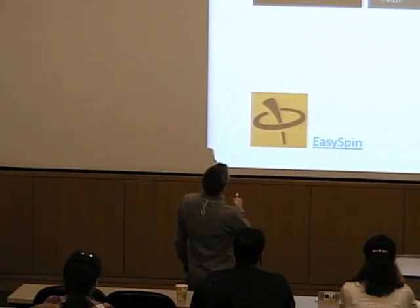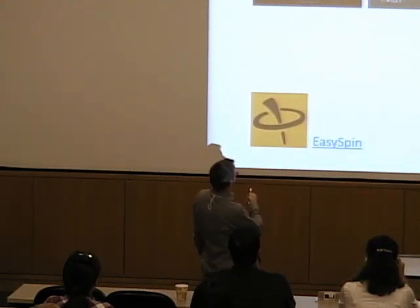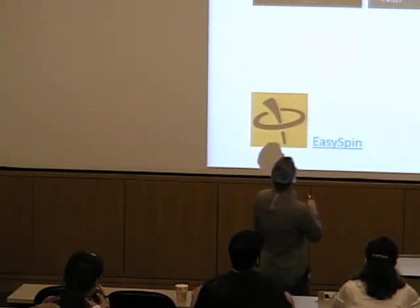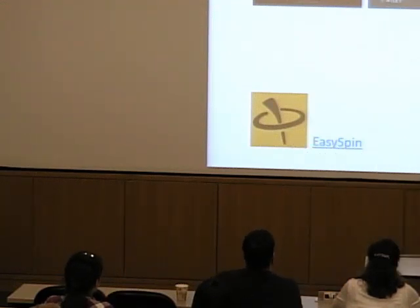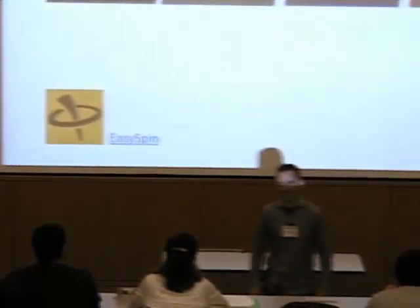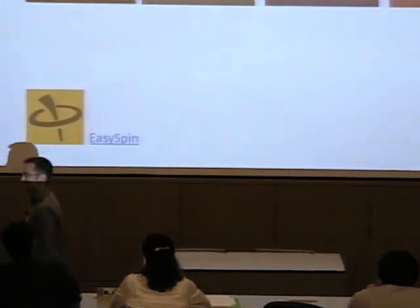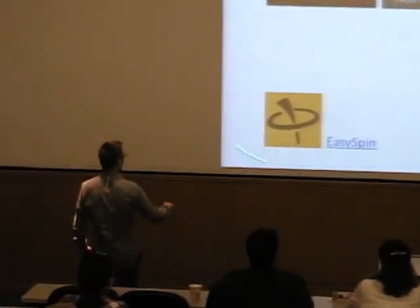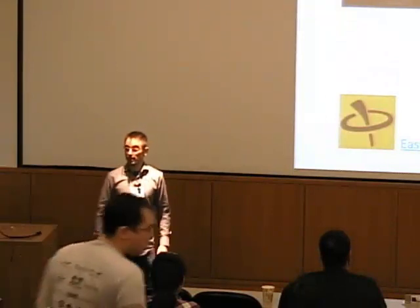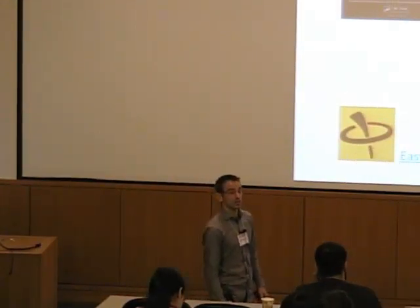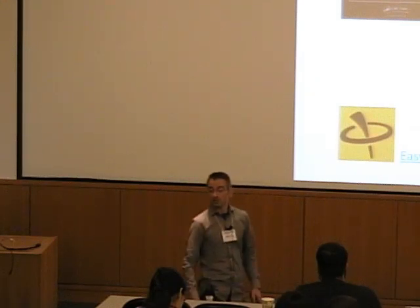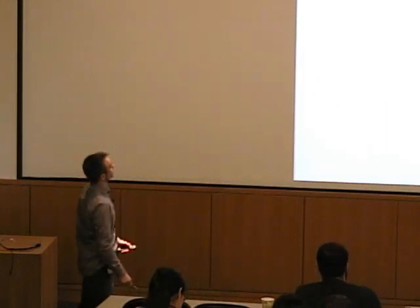Here's the EPR survival toolkit. If you want to do EPR spectroscopy, get those four books. They're in sort of increasing level of EPR sophistication. If you're not ready to deal with the last book, you can download software and analyze your data. EasySpin is a fairly commonly used EPR spectral simulation software. Go to easyspin.org and download it.